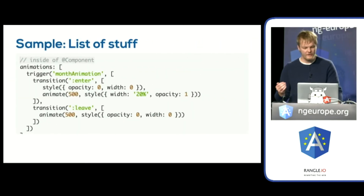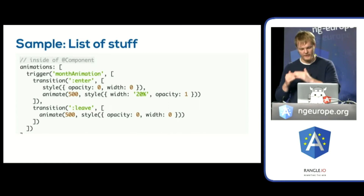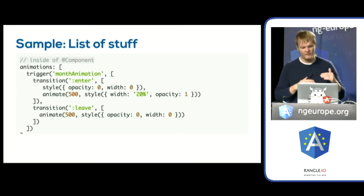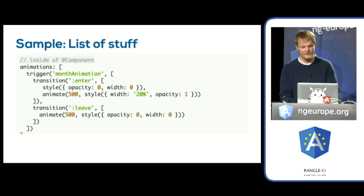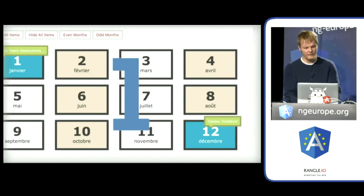Inside our DSL code we specify: transition enter — fire this event, run these animations; transition leave — run these animations as well. Animate for half a second.